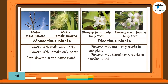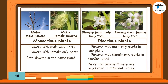Dioecious plants have separate male and female plants — one plant may only have flowers with a pistil (female), while another plant has flowers with a stamen (male). These plants should be planted side by side or near each other so that pollen from male plants can easily be transferred to the female plants.